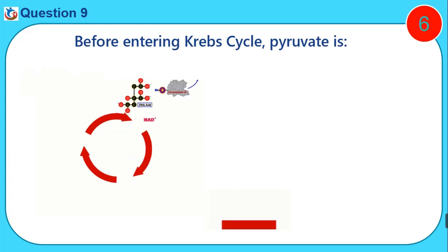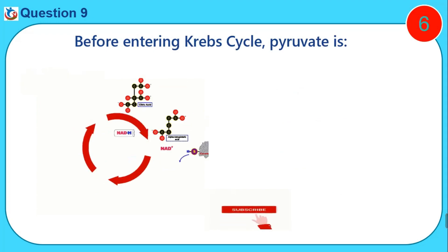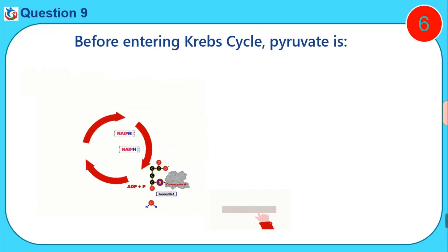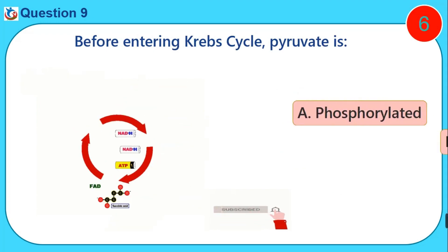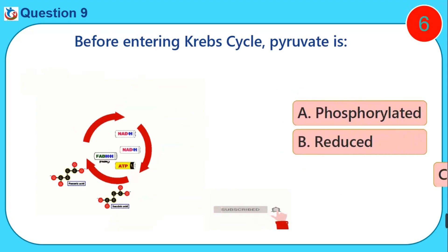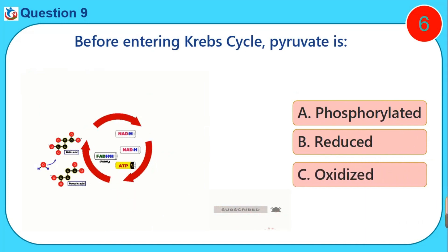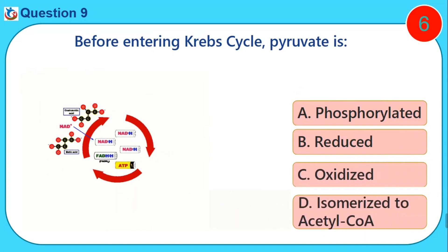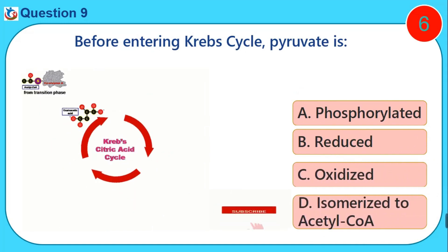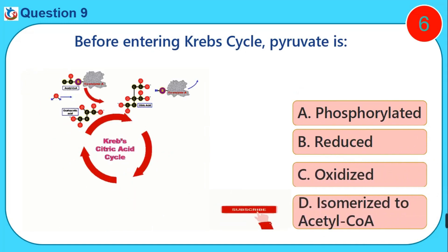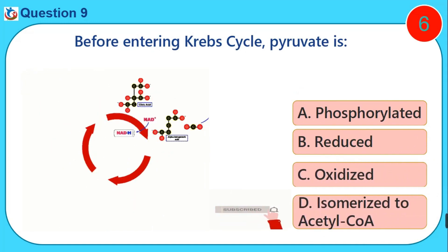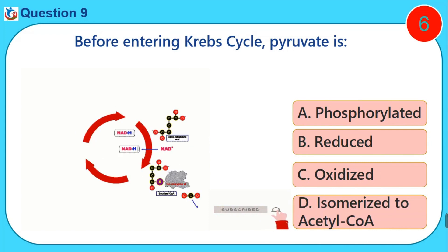Before entering the Krebs cycle, pyruvate is: A. Phosphorylated. B. Reduced. C. Oxidized. D. Isomerized to acetyl-CoA.